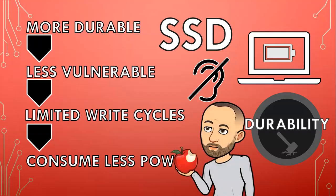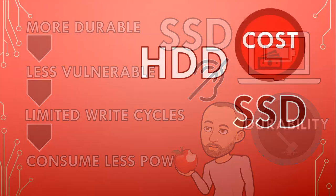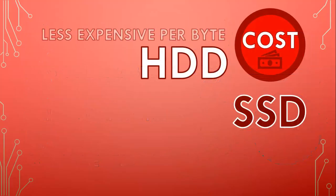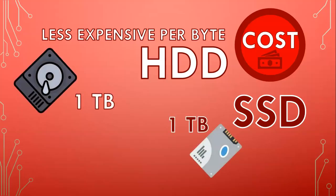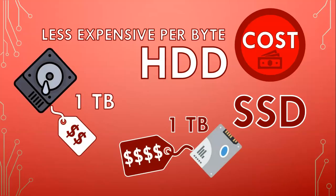So, all you have said so far is that solid state drives are better than hard drives — what's even the point of hard drives? Well, there is one category where hard drives are slightly better, and that's cost. Hard drives are generally less expensive per byte compared to solid state drives. In other words, a one terabyte hard drive will be cheaper than a one terabyte solid state drive. And because solid state drives are newer technology, their high volume storage options are less available.